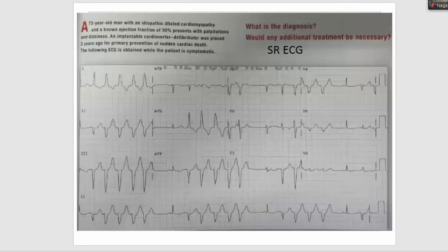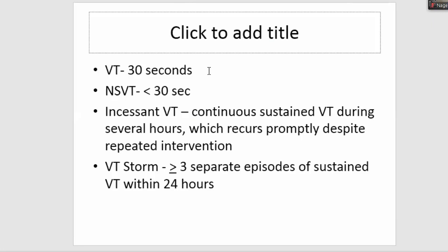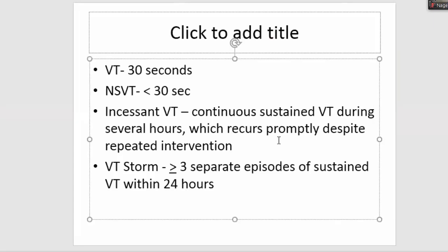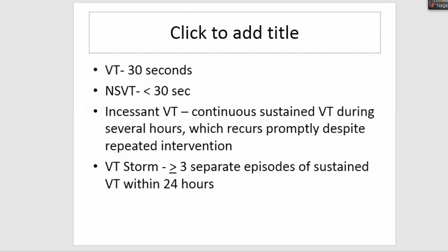To review key VT terminology: sustained VT lasts more than 30 seconds; non-sustained VT lasts less than 30 seconds. Incessant VT is continuous sustained VT persisting for several hours of the day despite repeated interventions. Ventricular tachycardia storm is defined as more than three episodes of sustained VT within 24 hours, or more than three ICD shocks within 24 hours.